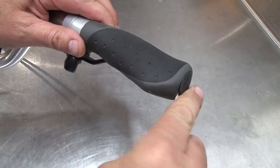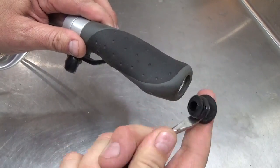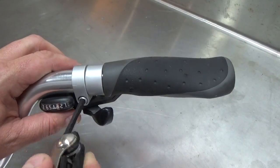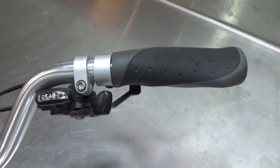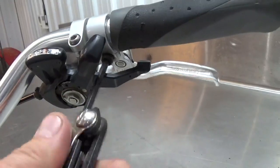Begin by prying off the end cap using the flathead screwdriver. Next, loosen the brake levers and gear shifters and move them away from the grip.